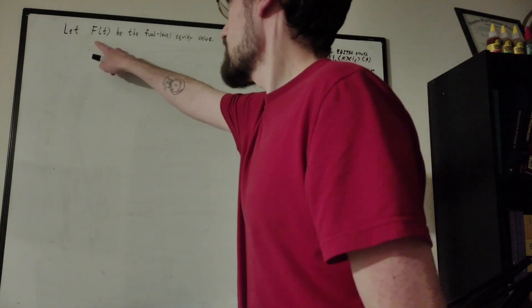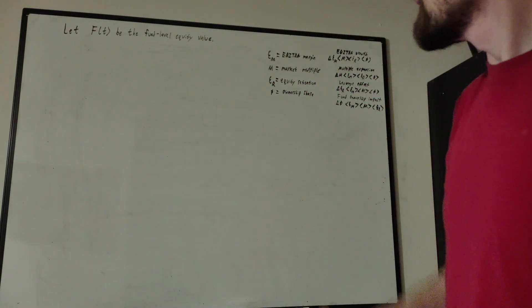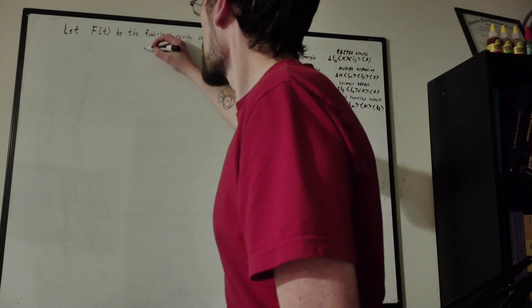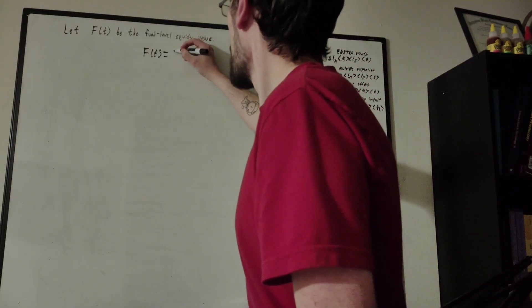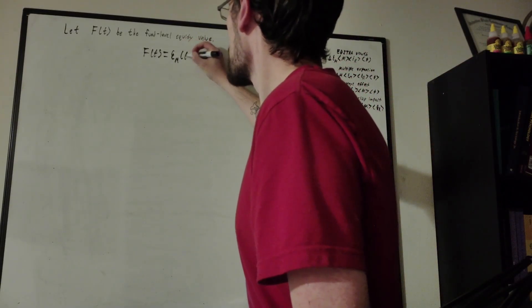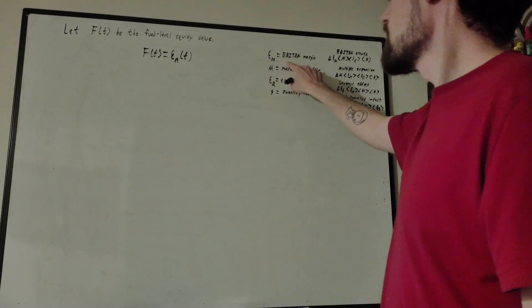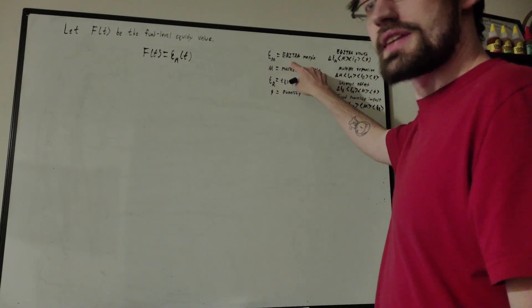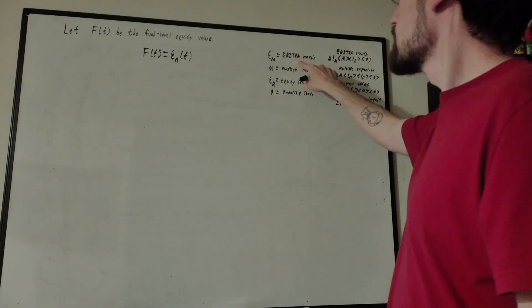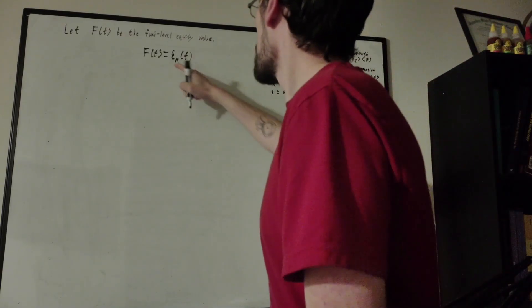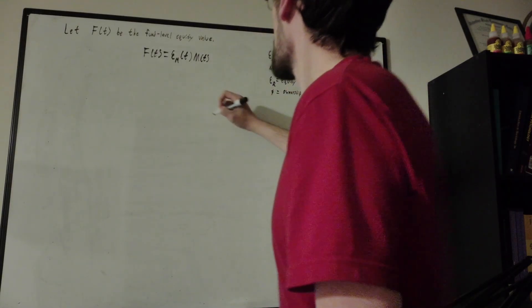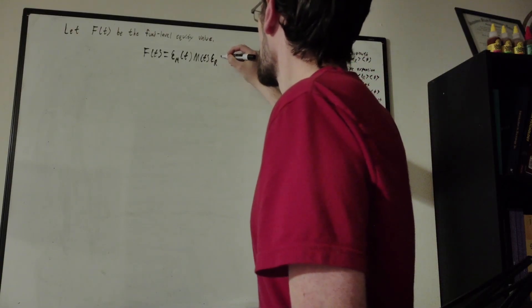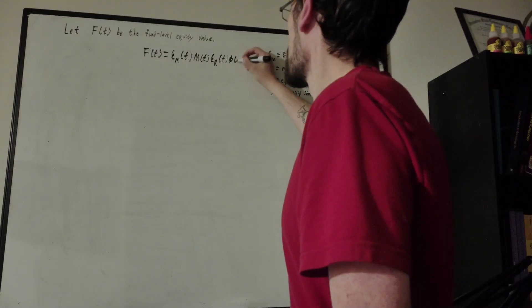We're going to let our function f at time t be the fund level equity value, and we're going to decompose it into four generators. So f(t) is equal to our EBITDA margin at time t — where EBITDA stands for earnings before income taxes, depreciation and amortization — times our market multiple m(t), times our equity retention at time t, times ownership share at time t. Those are our four generators.